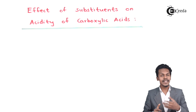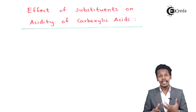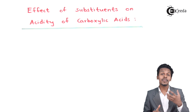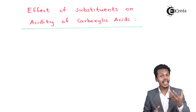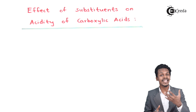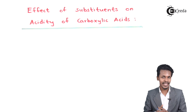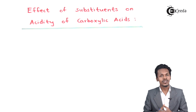In the previous lecture we discussed about the acidity of carboxylic acid. But in this case the substrates that are attached to the carboxylic acid play a vital role. Either they can increase the acidic strength of the carboxylic acid or they can decrease it. So this can be explained with the help of an example.